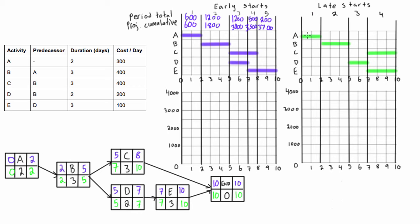For the late starts, period one is exactly the same — period total $600, cumulative $600. Period two is also the same — $1,200 period total, cumulative $1,800. Now period three goes from 5 to 7 with only activity D at $200 a day for 2 days, running $400 and bringing the project cumulative to $2,200. Period four has activities C and E both running — $400 plus $100 is $500 a day for 3 days — period total $1,500. Adding that to $2,200 gives us the same final project cumulative of $3,700.